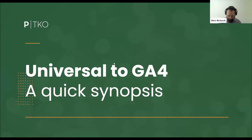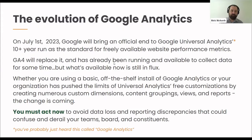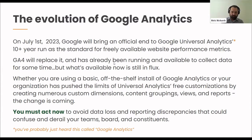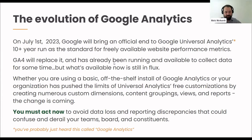We'll start with a quick synopsis — how we got here, the evolution of Google Analytics. Google Analytics has been around for quite a while, but Universal Analytics, which is what everyone's been using, will actually be slightly more than 10 years old when it is sunsetted next summer, July 1st. And it's a big deal — it's a really big deal.